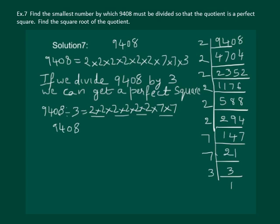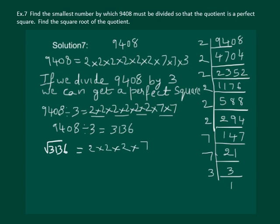9408 divided by 3 gives us 3136. Now it remains to find the square root of 3136, which is equal to 2 × 2 × 2 × 2 × 7 × 7. Taking one 2 for each pair, and 7 from this pair.